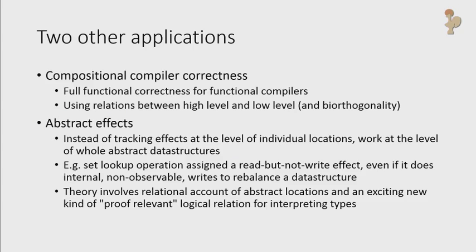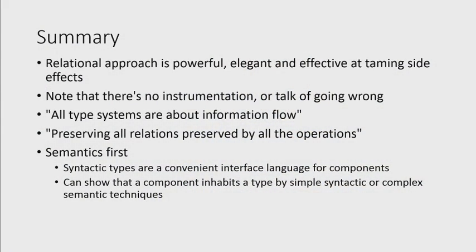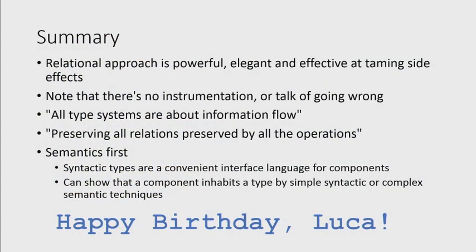So we have two other applications which I don't have time to talk about. One of which is doing full functional correctness of a compiler and the other is cranking up the effect system to talk about abstract data structures instead of concrete locations in the heap. But I will summarize by saying the relational approach is a powerful, elegant, and effective way of taming side effects. I will draw your attention to the fact that I didn't instrument anything. There's no talk about going wrong here. And so two slogans. So all type systems are about information flow. They're all about how much difference makes a difference, if you like. And this slogan about preserving all relations preserved by all the operations I think is a very valuable one. It's something I've been using logical relations for a long time before I realized that was what we were doing all along. And I'd like to encourage you to take the semantics first. So view your syntactic types as an interface language for components but then you can show that a piece of code matches that contract matches that interface by lots of different methods. It might be a simple type system or it might be a complicated logic. And finally happy birthday Luca. Thank you.